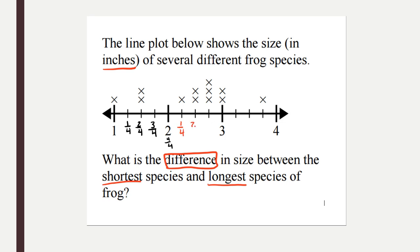Continuing to label: one fourth, two fourths, three fourths — four fourths would be three wholes. Then one fourth, two fourths, three fourths — four fourths would be our whole number four. Now I'm going to look for our shortest number. I'm looking for the smallest number with an X over it, and on this line plot it would be one.